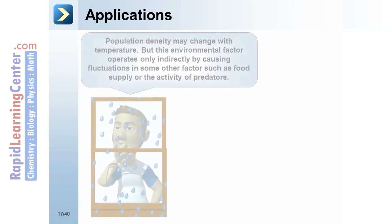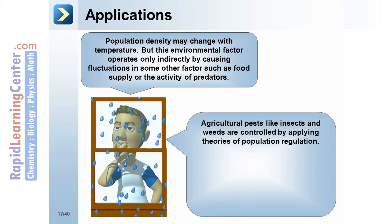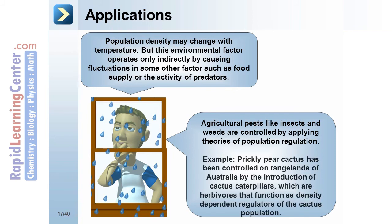Population density may change with temperature, but this environmental factor operates only indirectly by causing fluctuations in some other factor such as food supply or predator activity. Agricultural pests like insects and weeds are controlled by applying theories of population regulation. An example is the prickly pear cactus, controlled on the rangelands of Australia by the introduction of cactus caterpillars — herbivores that function as density dependent regulators of the cactus population.